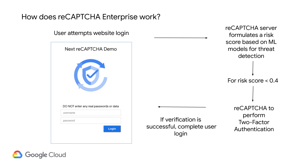Let's walk through this workflow in a little more detail. Every time a user tries to log in, ReCAPTCHA Enterprise collects the user behavior patterns from the web page and formulates a risk score using machine learning models on the ReCAPTCHA server. The risk score can vary anywhere between zero and one, zero being a bad actor and one being a good user.